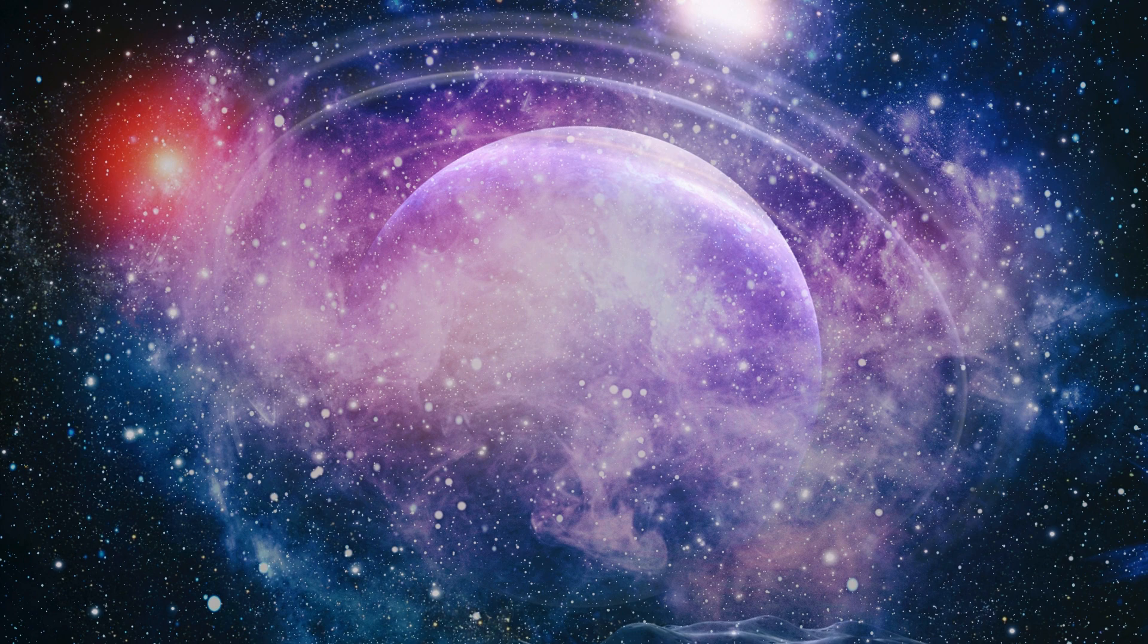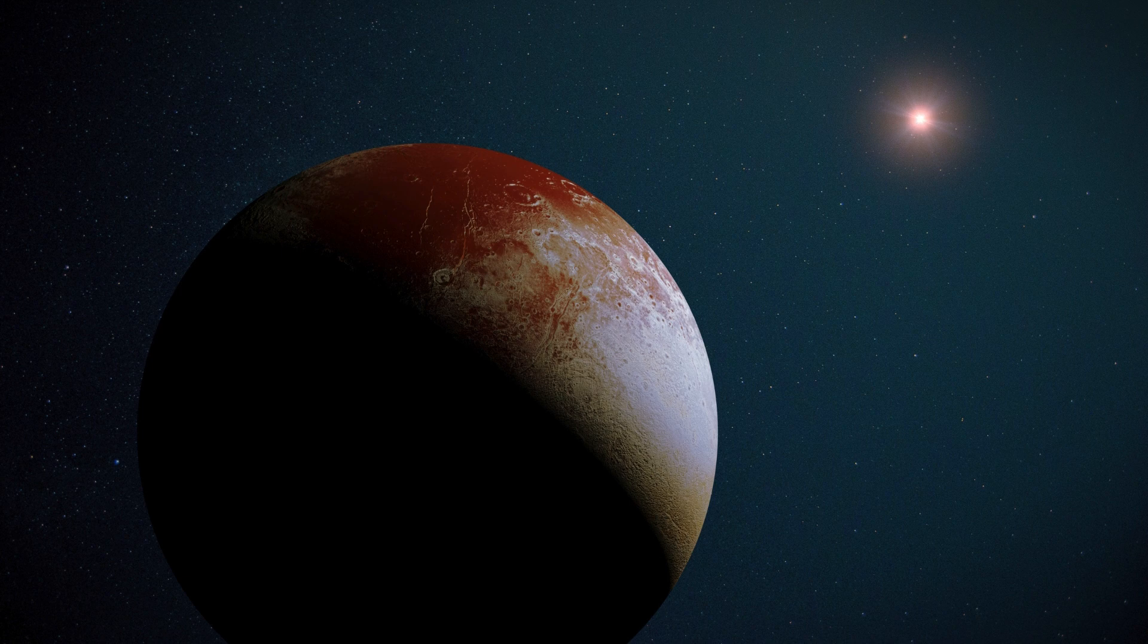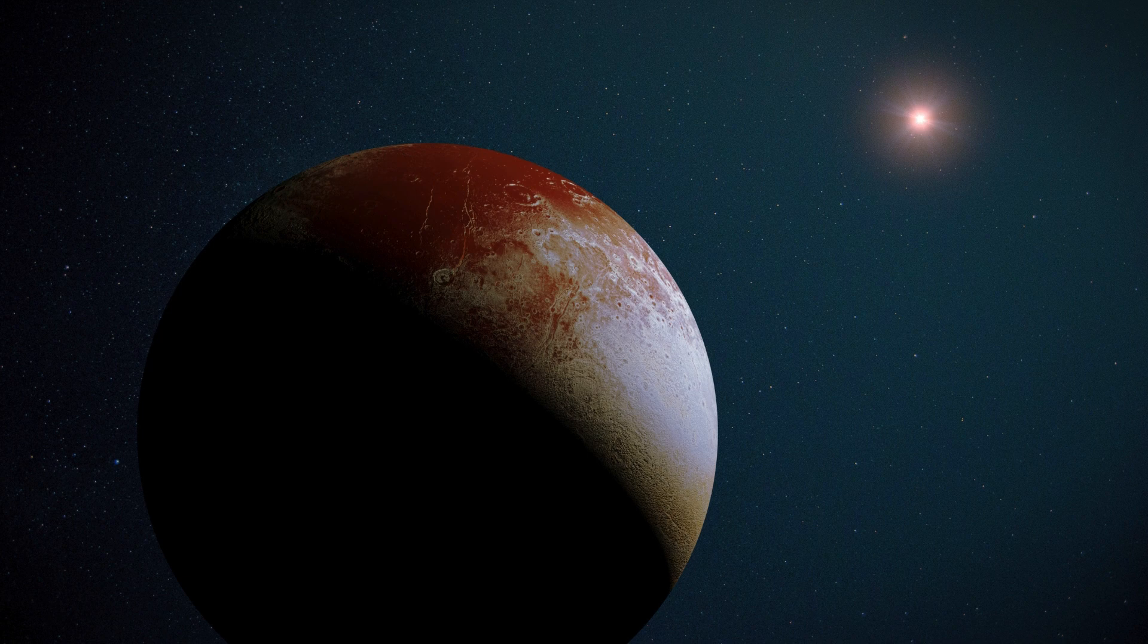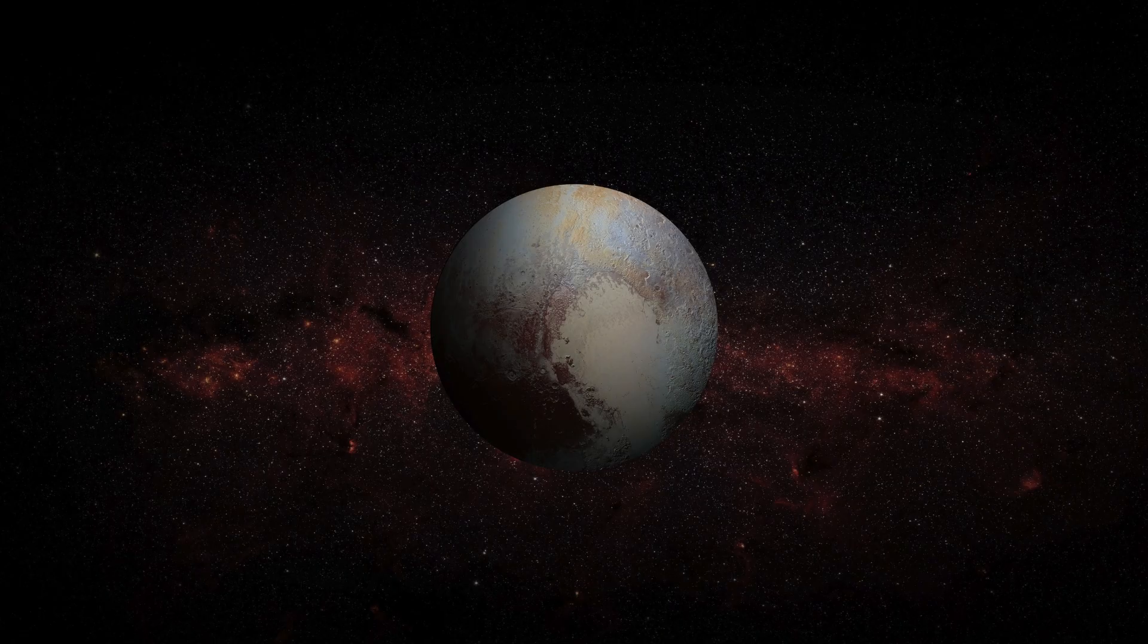Following deliberations, dwarf planet status was conferred upon both Pluto and Eris. This decision was significant as it marked a departure from the traditional understanding of what constitutes a planet and reflected a more nuanced understanding of celestial dynamics. Eris, previously known as 2003 UB 313, was renamed after the Greek goddess of strife, reflecting the controversy and debates surrounding its classification.